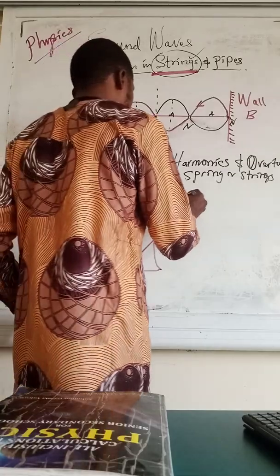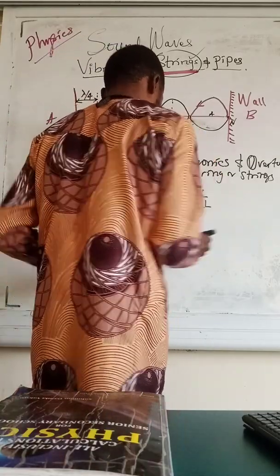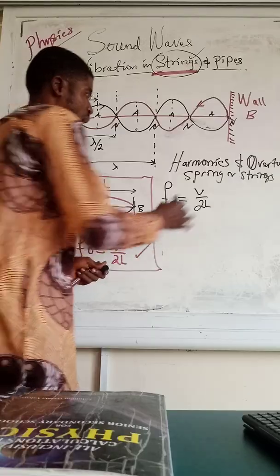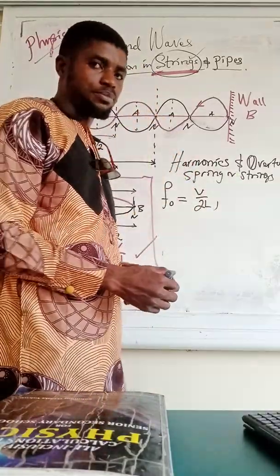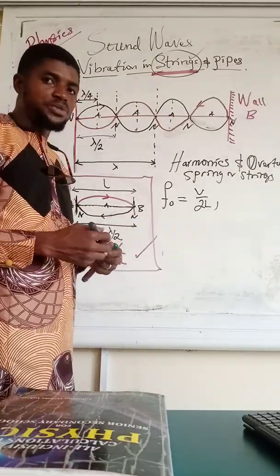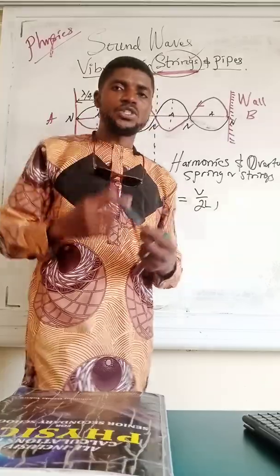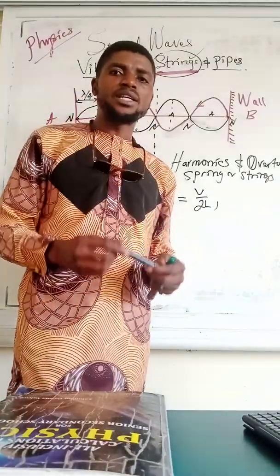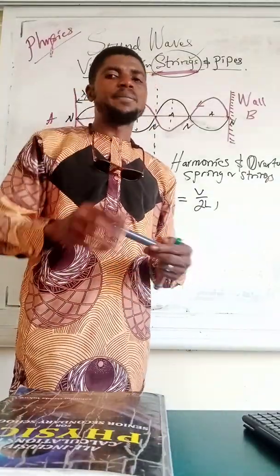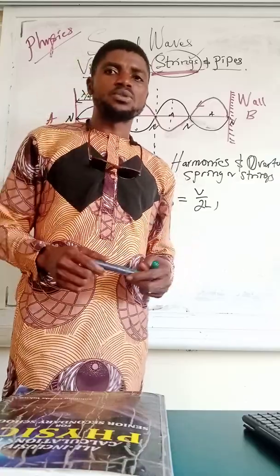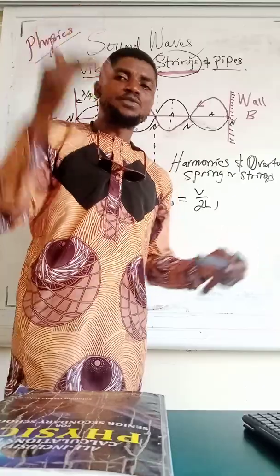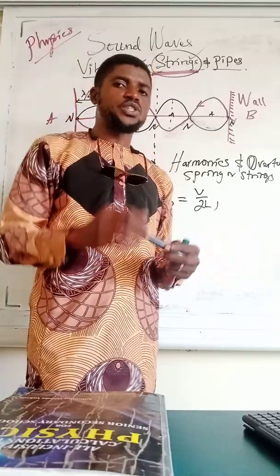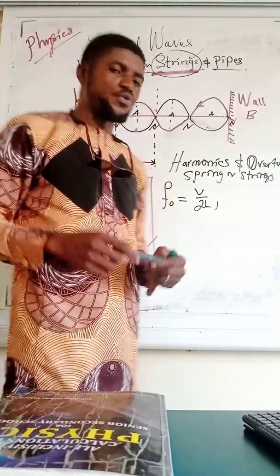This is the first harmonic, given as V over 2L, and the first harmonic produces a zero overtone. So: first harmonic equals zero overtone, second harmonic equals first overtone, third harmonic equals second overtone, fourth harmonic equals third overtone, fifth harmonic equals fourth overtone, and so on and so forth.